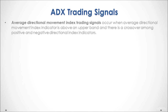Average directional movement index trading signals occur when the average directional movement index indicator is above an upper band and there is a crossover among positive and negative directional index indicators. Therefore, we have bands and double crossover type of trading signals.